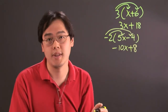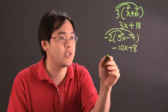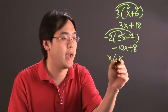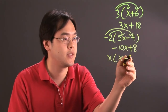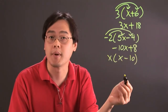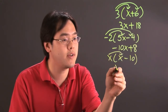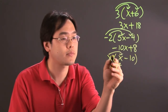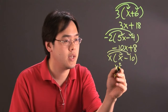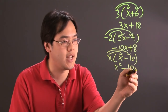Now if you have x times (x minus 10), same kind of idea. x times x is going to give you x squared. And x times negative 10 is going to give you negative 10x.